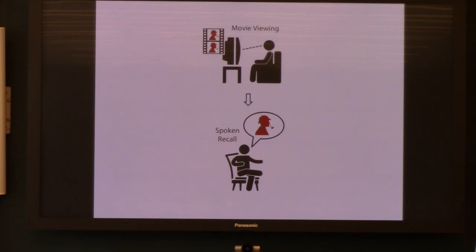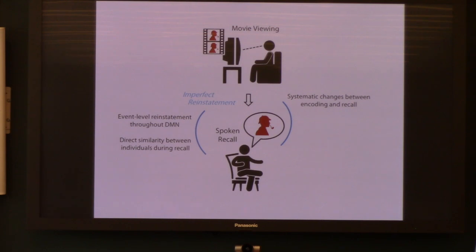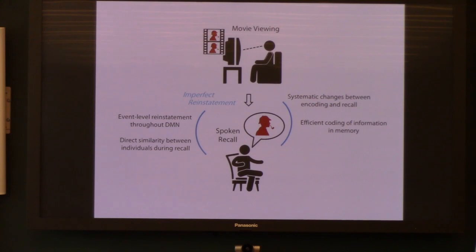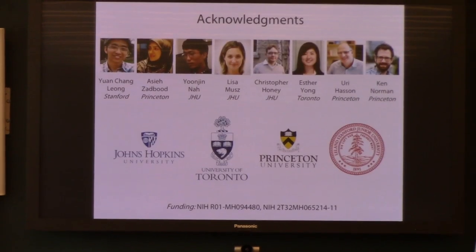So I talked about these paradigms where we have people watching a movie and then engaging in free spoken recall, giving you a flavor of the different kinds of analyses we can do with naturalistic stimuli. We talked about event-level reinstatement observed throughout the default mode network and the direct similarity between people during recall. We also talked about systematic changes — the transformation between patterns at encoding of the movie and the time of recollecting those events — and how there may be a kind of compression or efficient coding of information in memory, possibly even in the service of communicating to other people. And finally, I'm very interested in looking at brain dynamics during memory search, potentially relating it to work on word list recall and temporal order effects. Thanks to the many people who contributed to this work: Yuen Chang now at Stanford, and Chris, Esther, Uri, and Ken all on the Sherlock project.